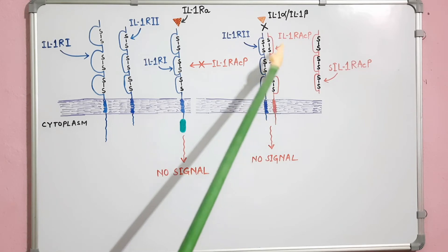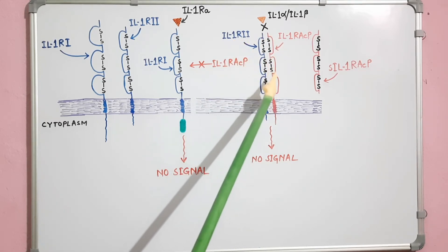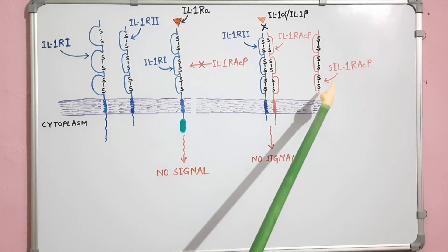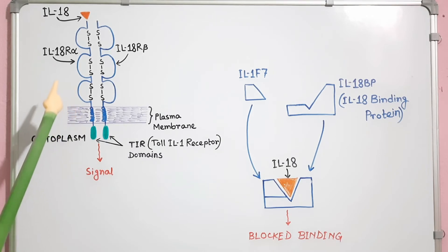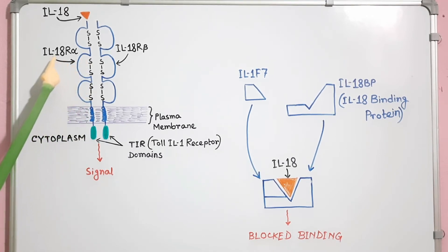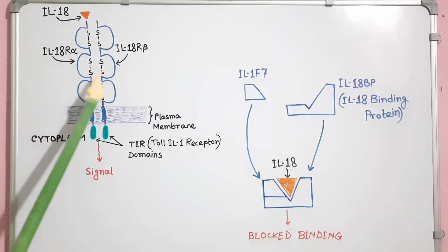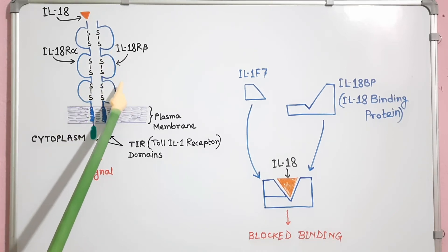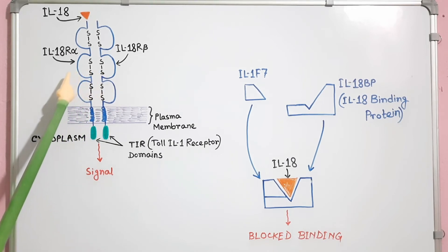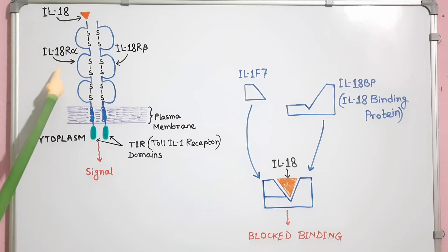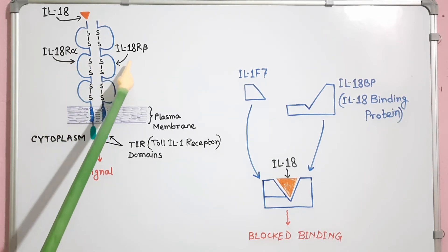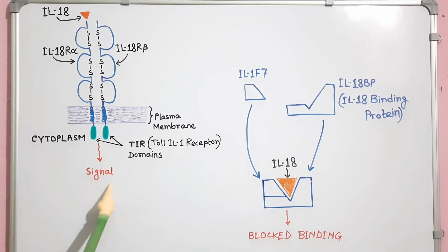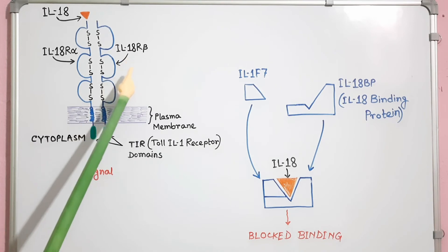IL1RA may also combine with IL1R2 or remain as a soluble molecule known as sIL1RACP. This is a diagram of the interleukin-18 receptor. It is composed of the inducible IL18R alpha chain and the constitutively expressed IL18R beta chain. IL18R alpha is an IL-18 binding receptor; binding of IL-18 activates IL18R alpha.